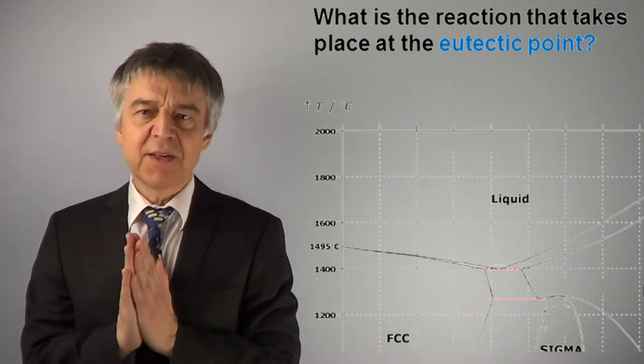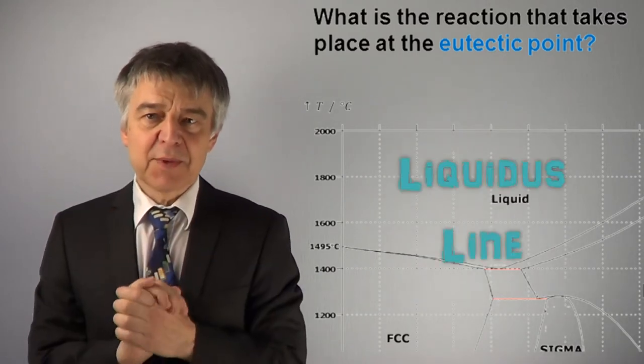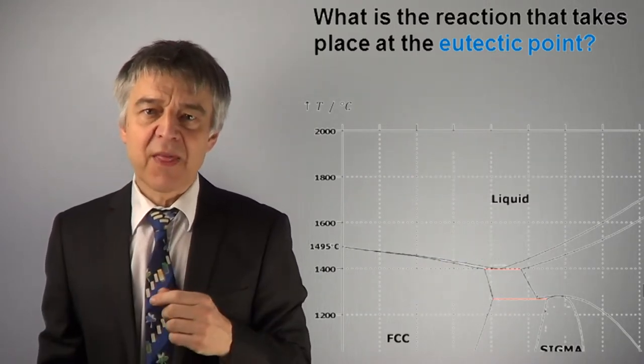The eutectic point is easily identified by the V shape of the liquidus line. We may draw it at the minimum.